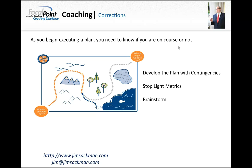The second thing is stop-light metrics. Instead of waiting for something to completely fail, you should have intermediate values — like a red, yellow, green system. Red is bad, yellow is caution, and green is good. If you're in the cautionary zone, that's something you really need to pay attention to so you can do a course correction before things get to red and require something more drastic.